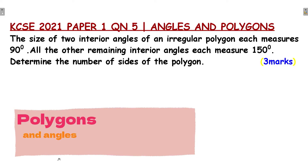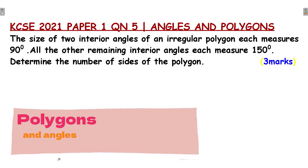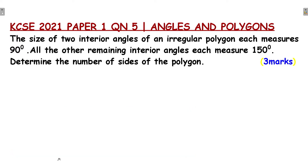The size of two interior angles of an irregular polygon each measures 90 degrees. All the other remaining interior angles each measure 150 degrees. Determine the number of sides of the polygon. Three marks.